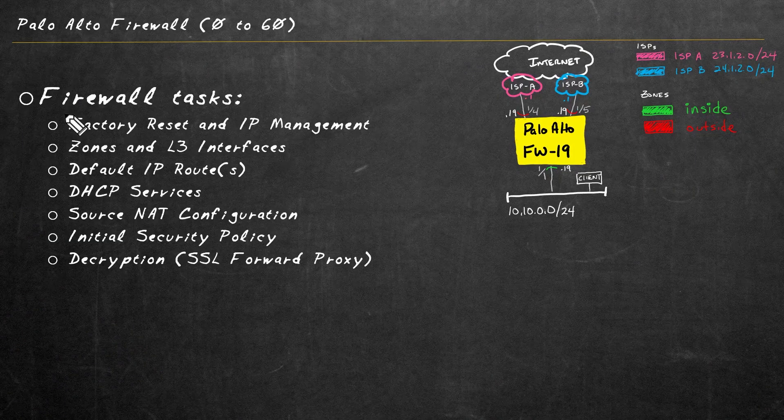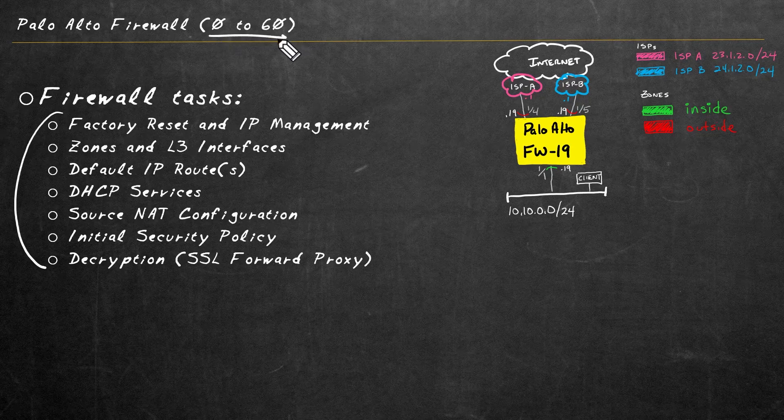In this video, I'd like to walk you through an example of configuring and verifying destination NAT on the Palo Alto Firewall. We're going to leverage an existing configuration that already exists as part of the 0 to 60 playlist, and we're just going to add on top of it.